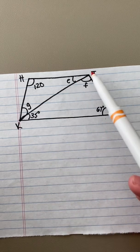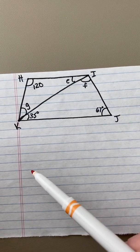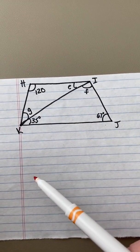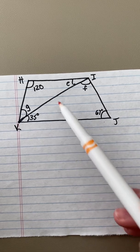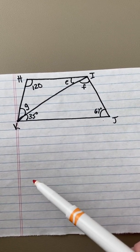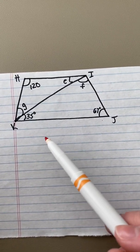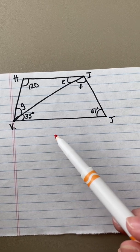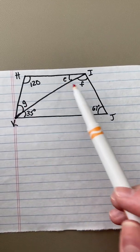The segment KI is taking this trapezoid and putting it into two groups and creating two separate triangles. I can use the properties of triangles and trapezoids to help me solve for these missing angles.